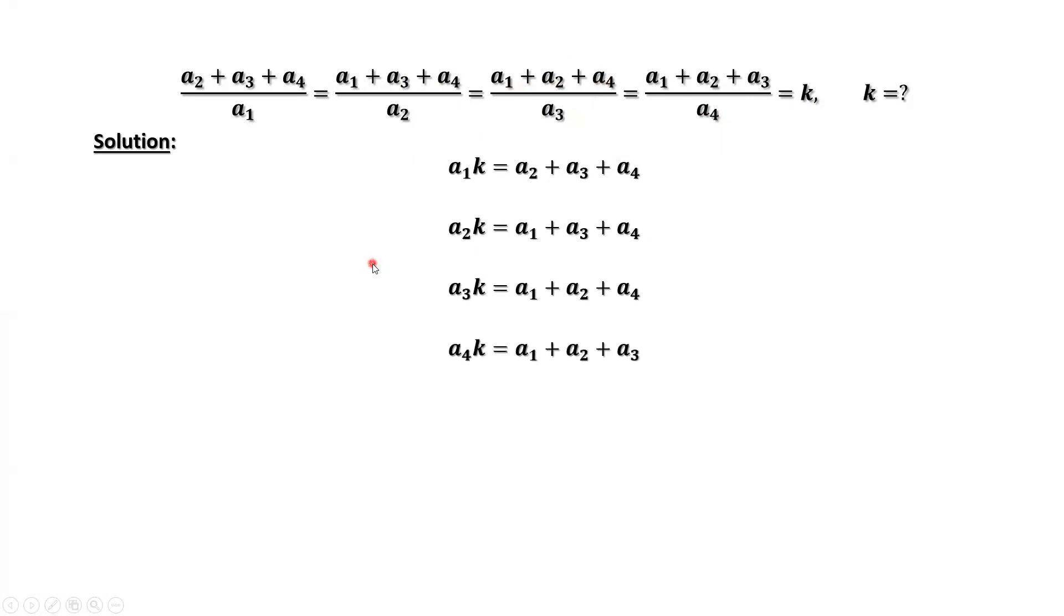Similarly, we have A4 times K equals A1 plus A2 plus A3. We have four equations here.